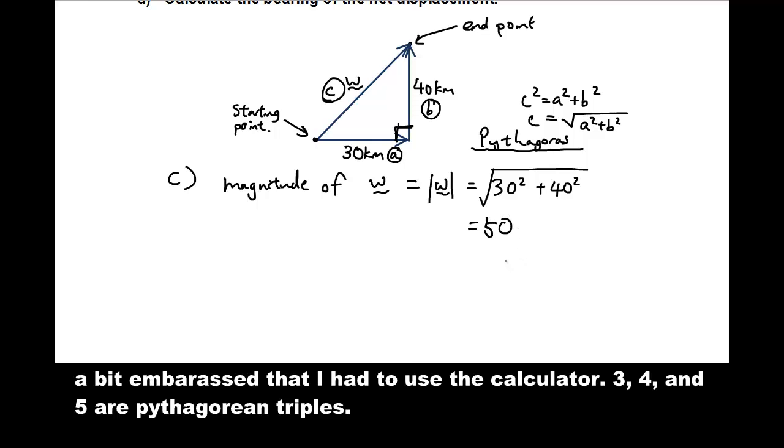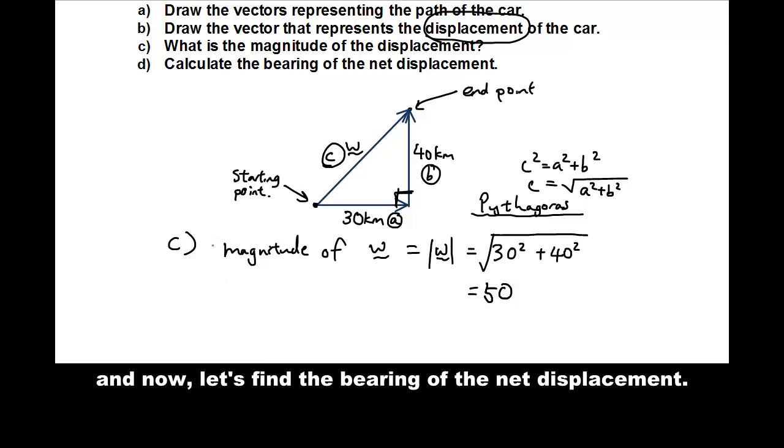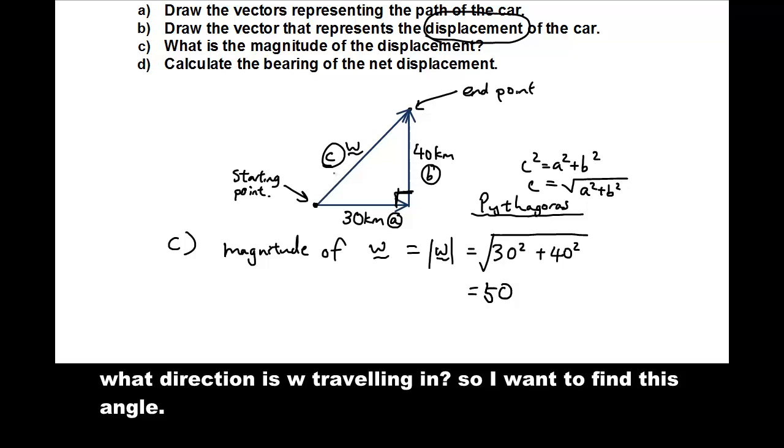Okay, a bit embarrassed that I had to work that out with a calculator actually. Because 3, 4, and 5 are Pythagorean triples. But anyway, so we have now done C. And now, let's find the bearing of the net displacement. Okay, so the bearing means what direction is W traveling in.